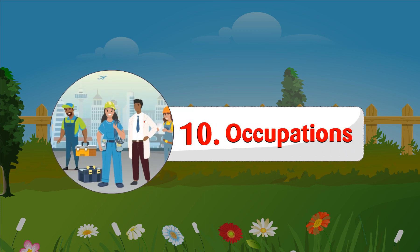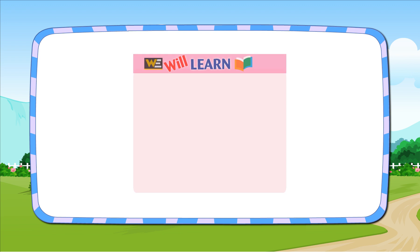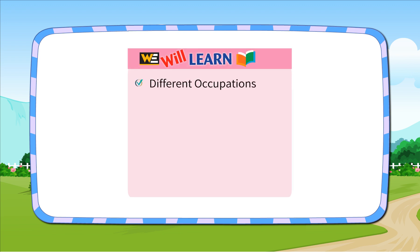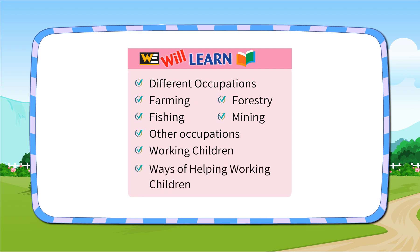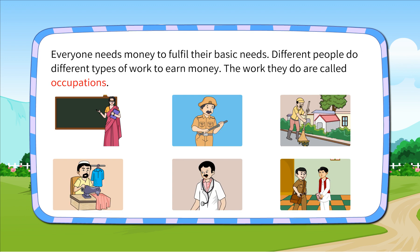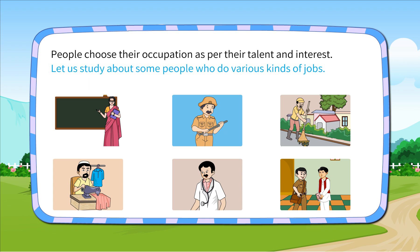Chapter 10: Occupations. We will learn about different occupations: Farming, Forestry, Fishing, Mining, Other Occupations, Working Children, and Ways of Helping Working Children. Everyone needs money to fulfil their basic needs. Different people do different types of work to earn money. The work they do is called occupations. People choose their occupation as per their talent and interest. Let us study about some people who do various kinds of jobs.